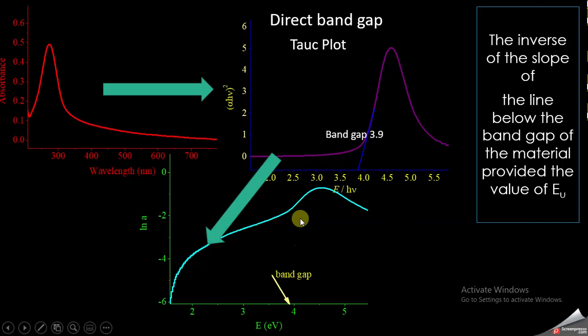That is how you transform the data from electronic absorption spectroscopy into an Urbach energy graph, from which you can calculate the Urbach energy and relate it to the defects of the material and the doping percentage of the material.